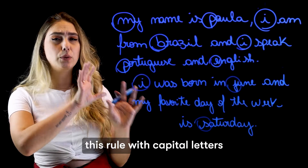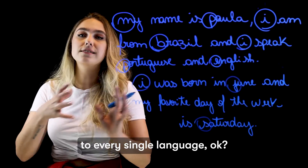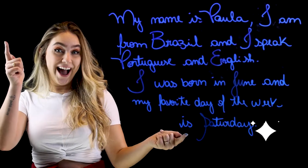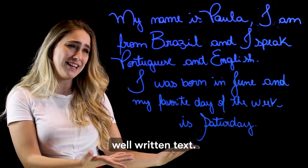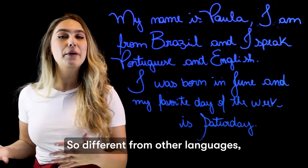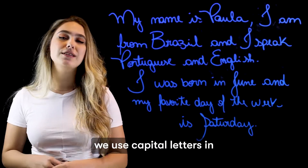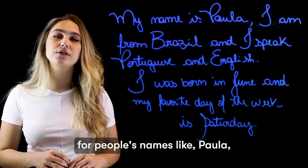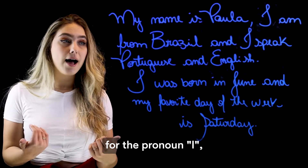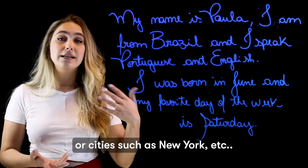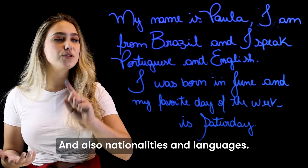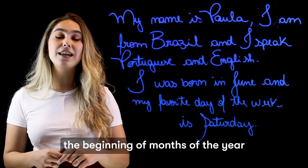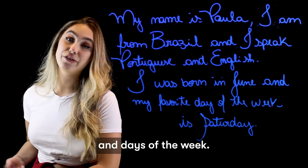This rule with capital letters does not apply to every single language — this is specific to English. So, different from other languages, in English we use capital letters in eight different contexts: at the beginning of a sentence, for people's names like Paula, for the pronoun I, places like Brazil or cities such as New York, nationalities and languages, and also at the beginning of months of the year and days of the week.